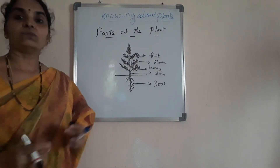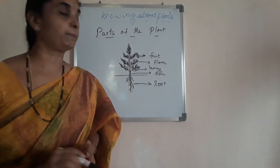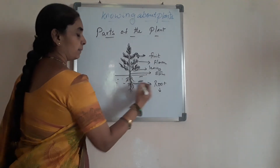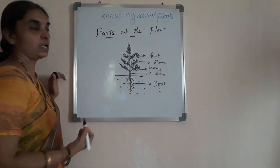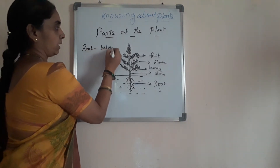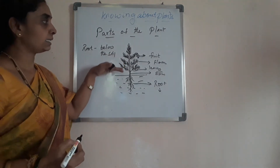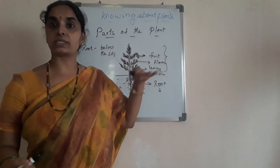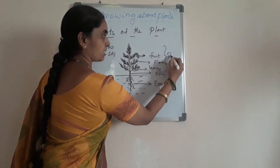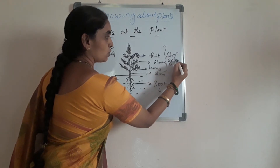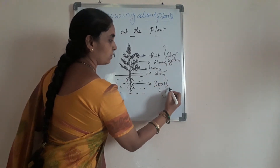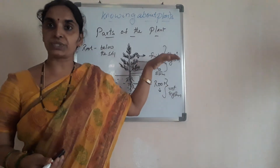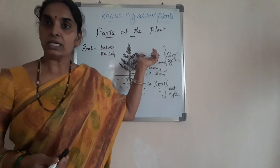Now let's see the different functions that each part of the plant performs. The root is observed below the soil, and the other parts — stem, leaves, flowers, and fruits — are seen above the soil. The plant contains two systems: the root system and the shoot system. We will study both the root system and the shoot system.